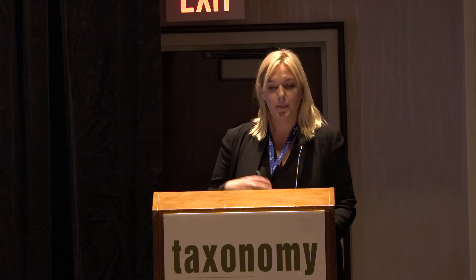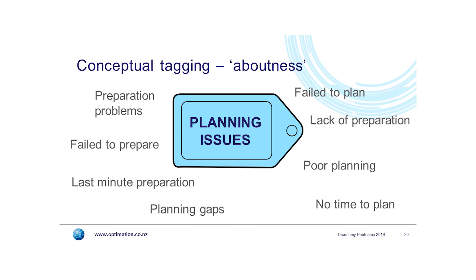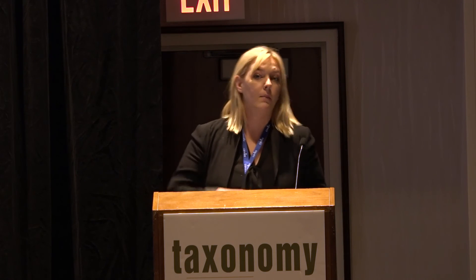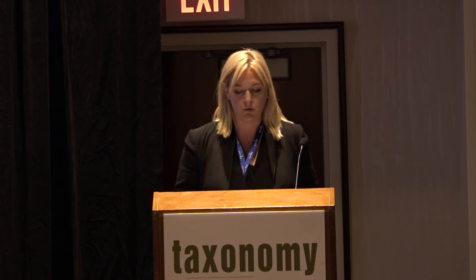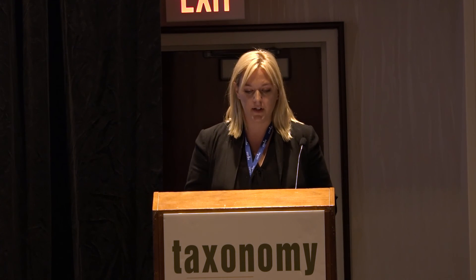We can take it even a step further and start getting into some of the sentiment type tagging where we're picking up the aboutness of the document. Even though no one said that this is basically a document about all the issues we had with planning, we can trigger — using all those evidence terms we've collected, the way we've structured our terms in the ontology, and the way we've used semantic software to apply them to content — those pivotal search terms or whatever is meaningful to your organisation onto that content.